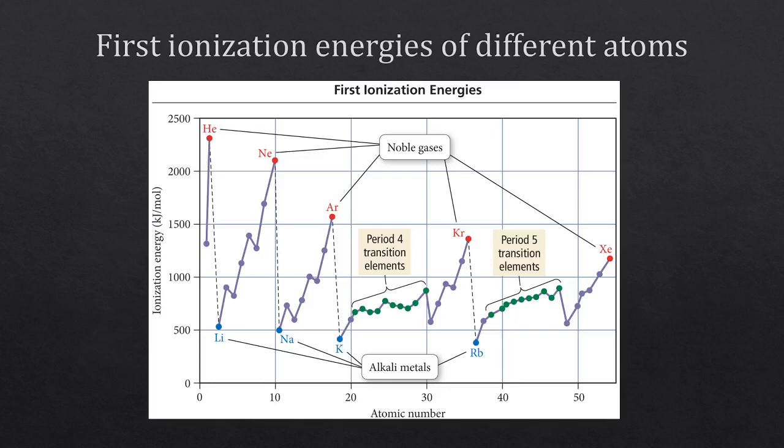This graph shows what first ionization energies look like across the periodic table. Noble gases are all very high compared to everything else because they are particularly stable configurations — they don't want to lose any electrons. On the other end, alkali metals like lithium, sodium, potassium, and rubidium only have one extra electron before they reach a noble gas configuration, so they are much easier to remove an electron from.